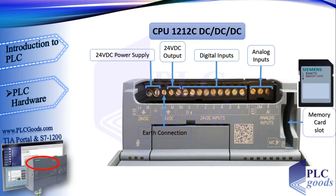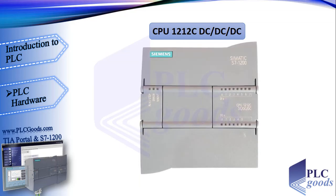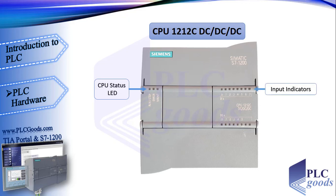Analog sensors give us a signal such as 0 to 10 volt DC or 4 to 20 milliampere. A memory card may also be needed, used either as a transfer card — to copy a program to the CPU's internal load memory without software — or as a program card, serving as external load memory for the CPU. On the front of the PLC there are LEDs: the first shows whether the CPU is running or stopped, the second indicates any configuration error, and the third is for maintenance requests. On the right side, LEDs indicate which input is on or off.